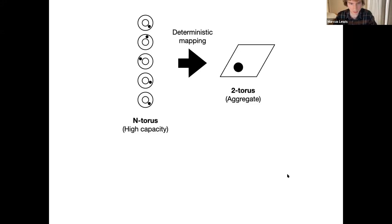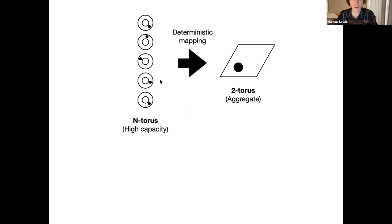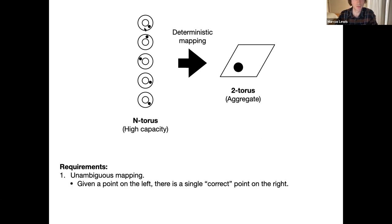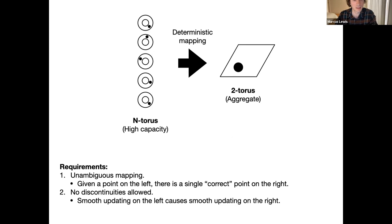To look at this analytically with precise terminology: I'm looking for a deterministic mapping from an N-torus — N rings with high capacity — onto a two-torus, a two-dimensional torus, that is some kind of aggregate of this code. The requirements it needs to meet are: it needs to be an unambiguous mapping, such that given a combination of where these dots are, there is a single correct position for the dot on the right. And the second requirement is you can't have discontinuities — smooth updating on the left should cause smooth updating on the right.